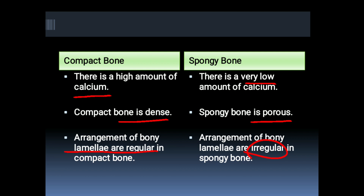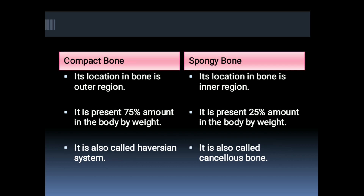Compact bone is located in the outer region of the bone, while spongy bone is located in the inner region. Compact bone is present at 75 percent of the body by weight, while spongy bone has 25 percent of the body by weight.